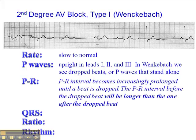The other key finding in a Wenckebach is that the PR interval becomes increasingly prolonged until a beat is dropped. This is the most common type of Wenckebach or 2nd degree AV block type 1. The key to interpretation is that the PR interval before the drop beat will be longer than the one after the drop beat.